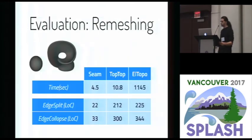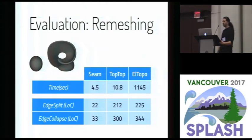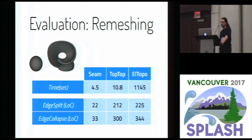To evaluate productivity, we wrote a remeshing benchmark in SIEM and compared it against two existing remeshing libraries. Not only is the operation code ten times shorter for all the operations we wrote, the entire application actually runs faster. This suggests that when you write these things manually, not only do you open yourself up to making errors, but all of that complexity leads to inefficient implementations.